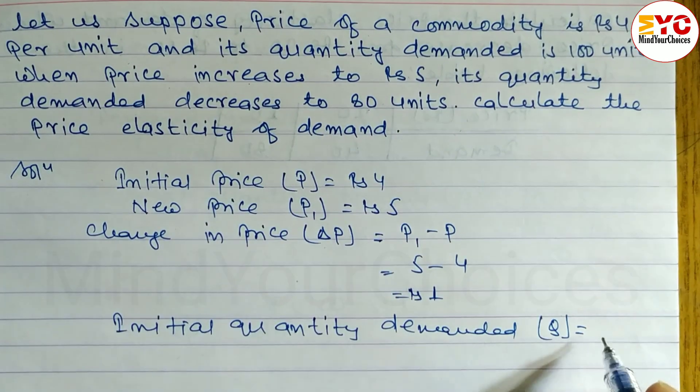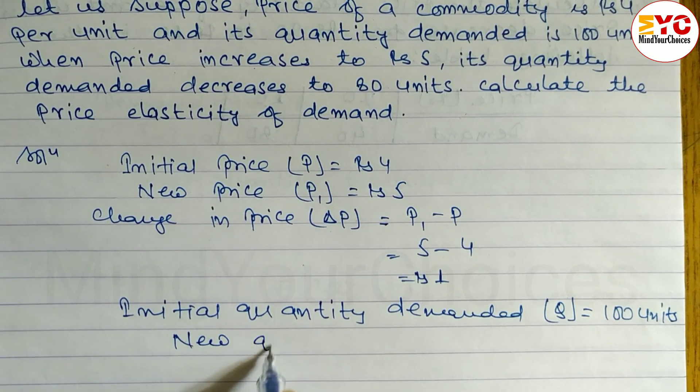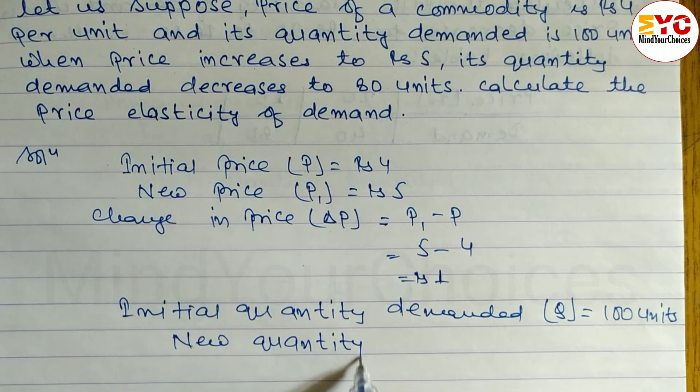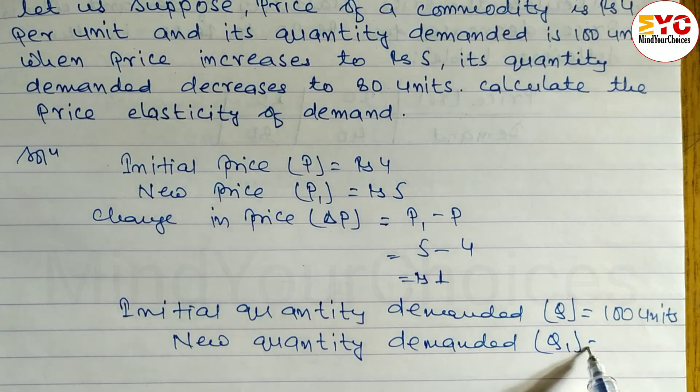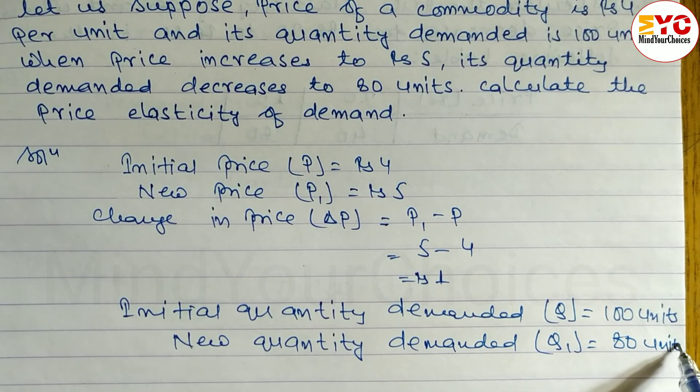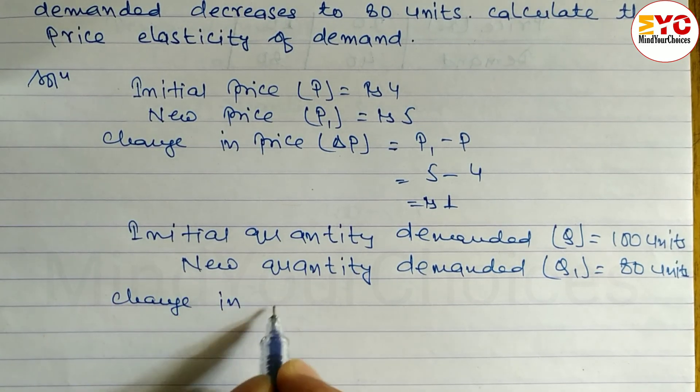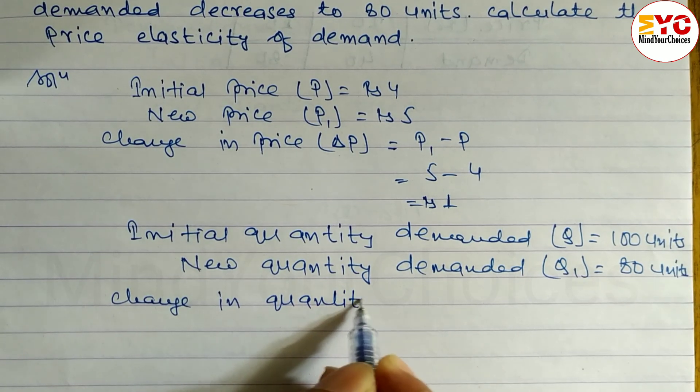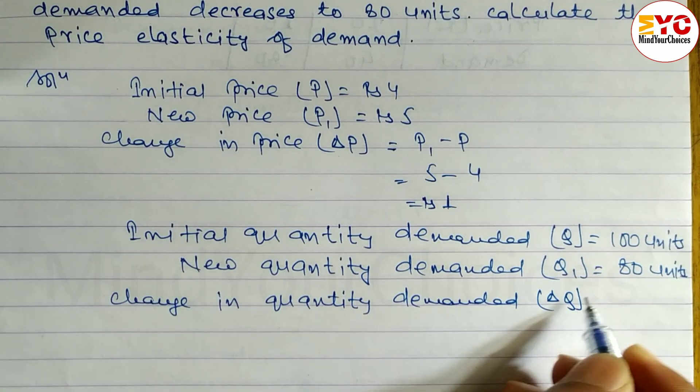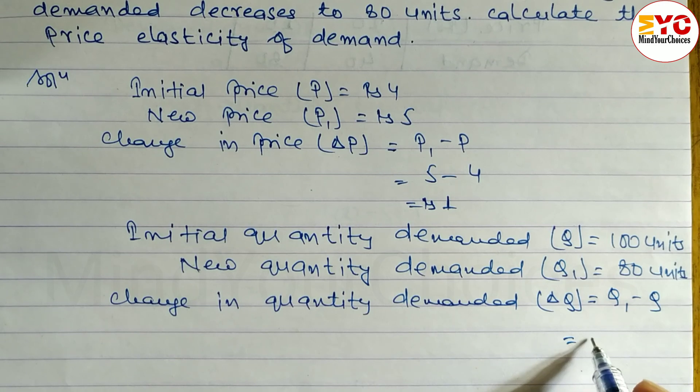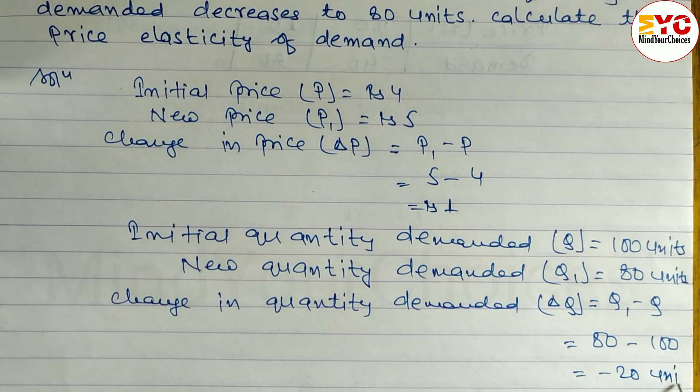New quantity demanded, denoted by Q₁, equals 80 units. Change in quantity demanded, denoted by ΔQ, and the formula is Q₁ minus Q, which equals 80 minus 100, equals minus 20 units.